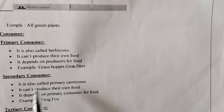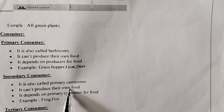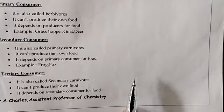Next, secondary consumer. It is called primary carnivores. They cannot produce their own food and depend on primary consumers for food. Examples: frog, fox.